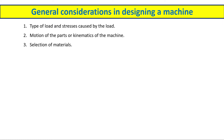We take the previous reference and choose the same material, because that reference part is already working and performing well under similar load conditions and motion. For example, if for a previous casting bracket we used aluminum, then while designing the new component we will also choose aluminum, because it is already performing well in that condition. That is why we generally prefer the reference material.